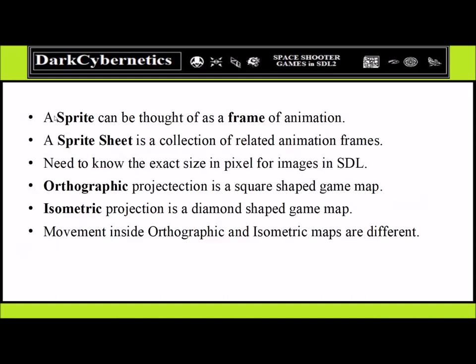We have sprites, and for each particular sprite we call that a frame. Inside a sprite sheet there is a collection of related images, and for individual color it's a pixel. There are two common perspectives for two-dimensional games: orthographic and isometric. Isometric is a diamond shape and orthographic is a traditional square shape. The coding for an isometric map versus an orthographic map is completely different when rendering — in an isometric background, the tiles lay over one another in a slanted, staggered perspective.